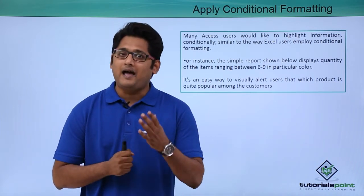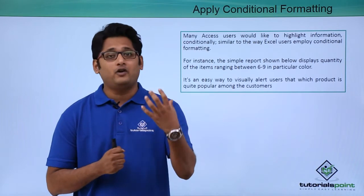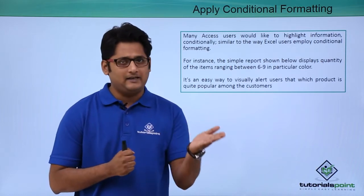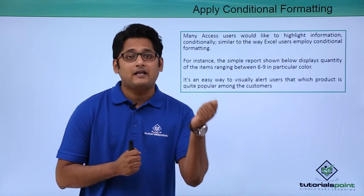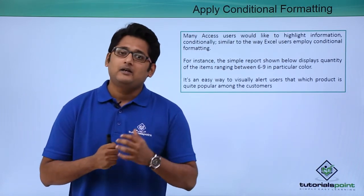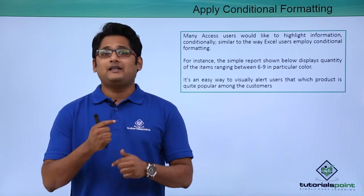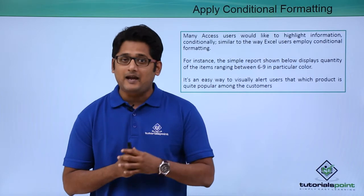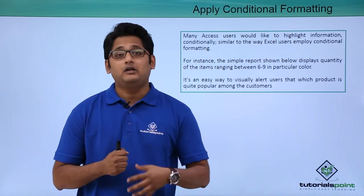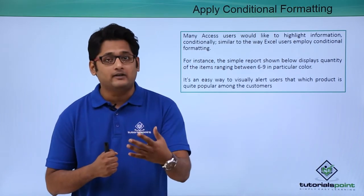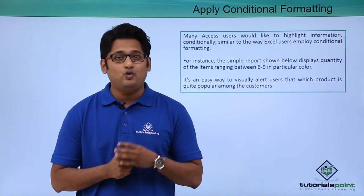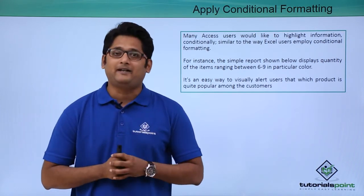Let's take an example: I have a report with information about the quantity of orders that customers have placed. We are going to highlight a record where a customer has placed an order 6 to 9 times for a particular product, and it will highlight that product in yellow. This will alert the user which product is quite popular among customers and where they have placed repeated orders, giving us an understanding of the popularity of a certain product.